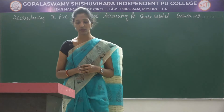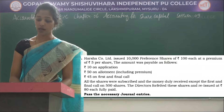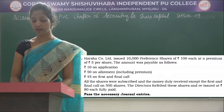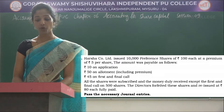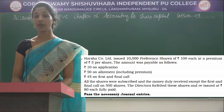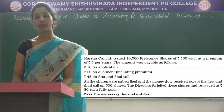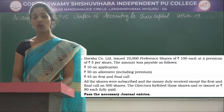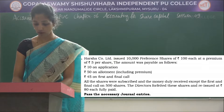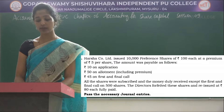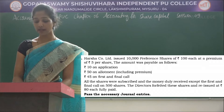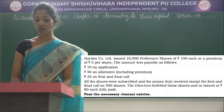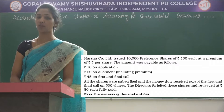Here is your example problem. Harsha Company Limited issued 10,000 preference shares of Rs 100 each at a premium of Rs 5 per share. The amount was payable as follows: Rs 10 on application, Rs 50 on allotment including premium, Rs 45 on first and final call. All the shares were subscribed and the money duly received except the first and final call on 500 shares. The directors forfeited these shares and re-issued at Rs 80 each fully paid.